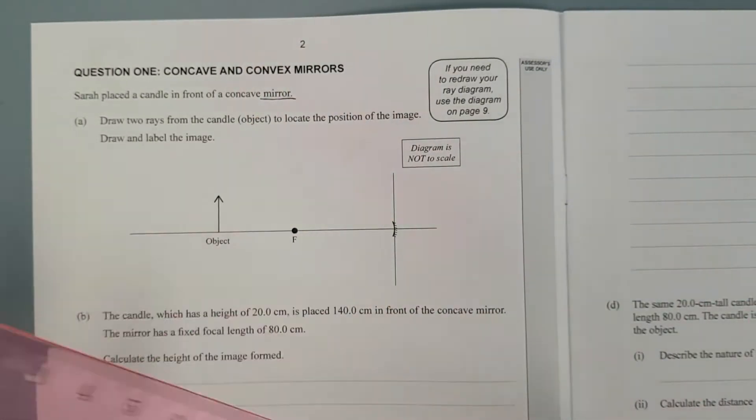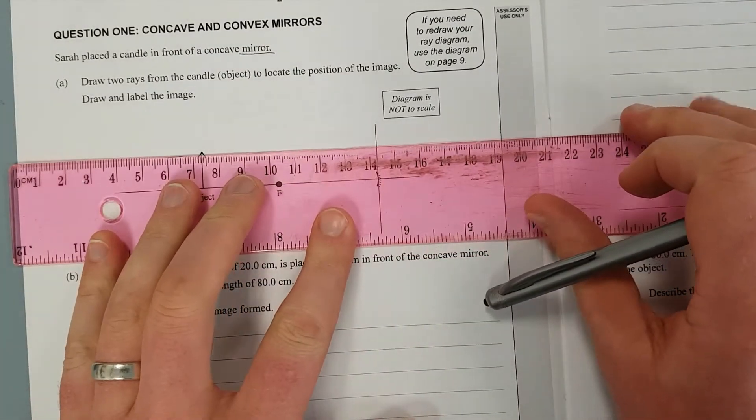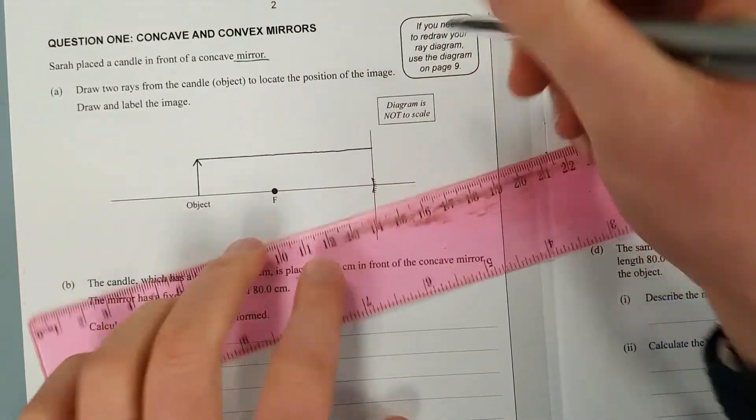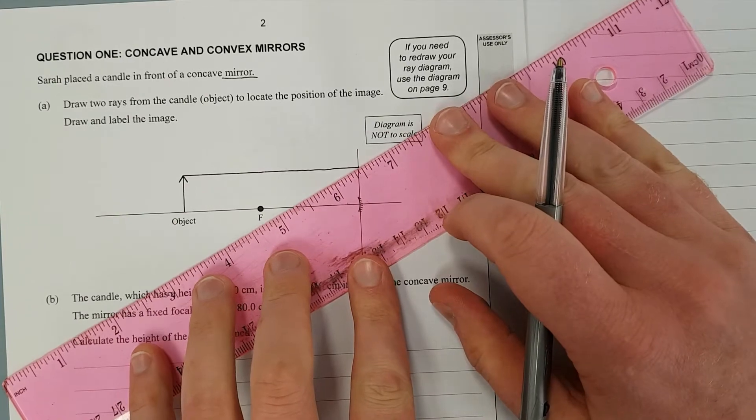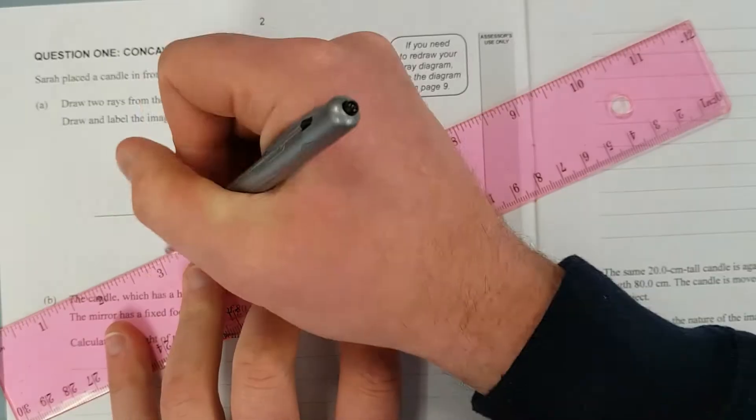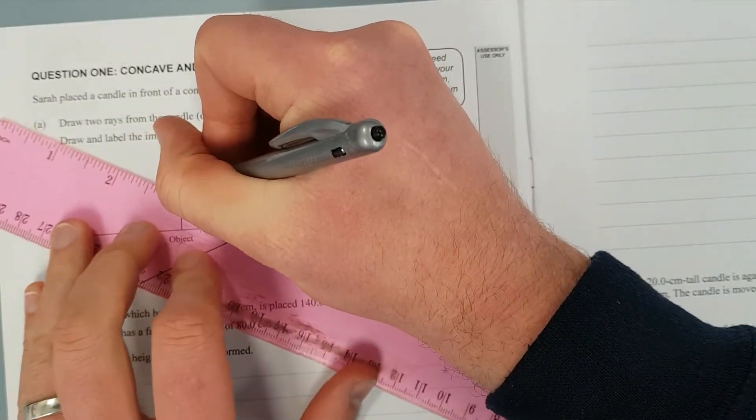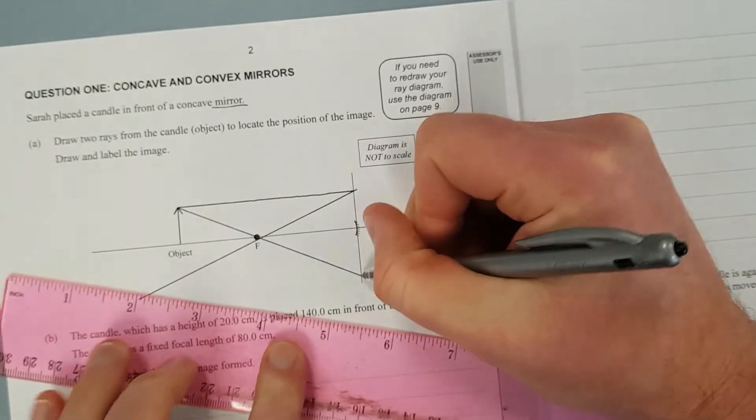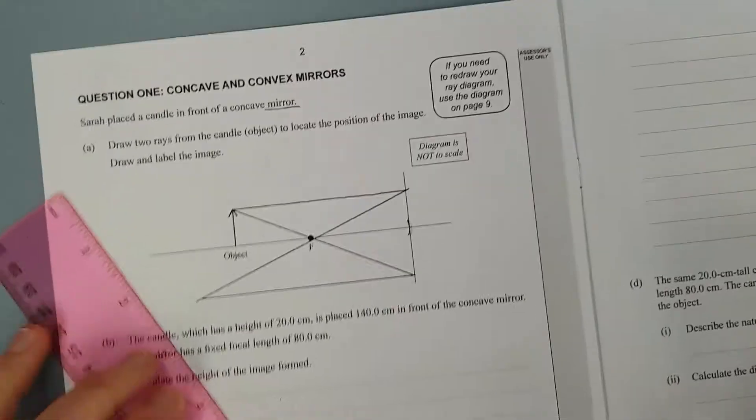And for this exam you're going to need a ruler. So this is a concave mirror, so we're going to go in parallel. And out through the focal point. And now we're going to go in through the focal point and out parallel.